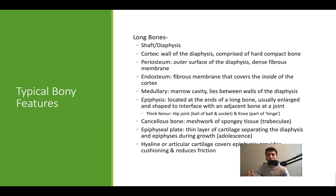Around the sites of articulation at the epiphysis, there's a cartilaginous covering that provides cushioning and allows the joint to slide and move more cleanly. There are pathologies related to this — osteoarthritis involves loss of that cartilage. We'll talk a little more about that in the next video.